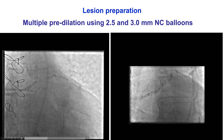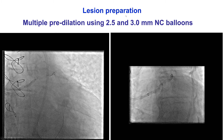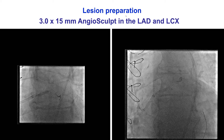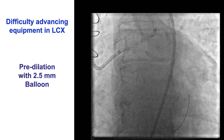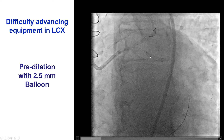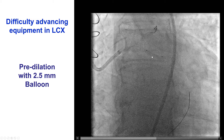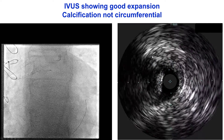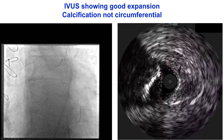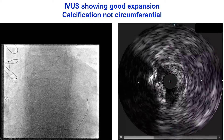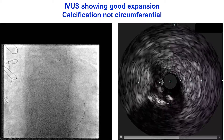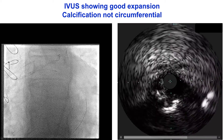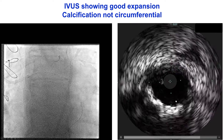There was lesion calcification, so we pre-dilated with 2.5 and 3.0 mm non-compliant balloons, and then used a 3.0 Angiosculpt in both vessels. There was still a little waist, so we performed repeat dilations. There was also difficulty advancing equipment into the circumflex, so we pre-dilated the proximal circumflex with a 2.5 mm balloon. We then performed intravascular ultrasound into the circumflex. There was calcification, but it was not circumferential, and there was a significant lesion in the proximal circumflex, but adequate vessel preparation prior to placing the stent appeared to have been achieved.